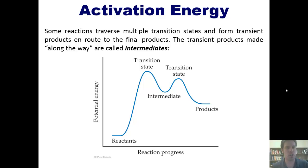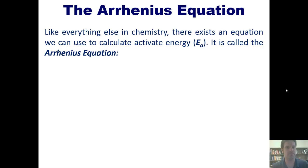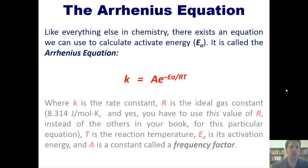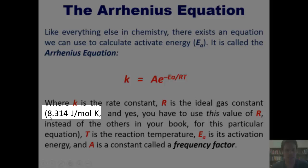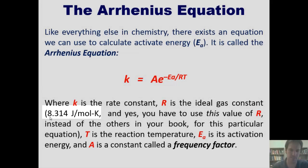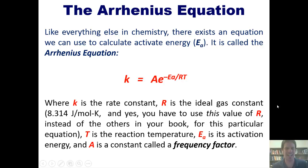I'm now going to introduce you to the Arrhenius equation. Like everything else in chemistry, there exists an equation we can use to calculate activation energy, or E sub A. It's called the Arrhenius equation. In this equation, K is the rate constant, R is the ideal gas constant — for this equation you must use 8.314 joules per mole Kelvin — T is the reaction temperature, E sub A is the activation energy, and A is something called the frequency factor.